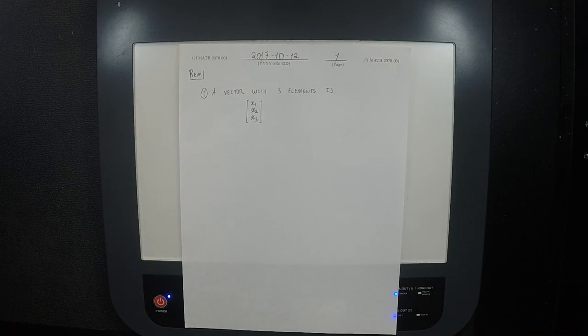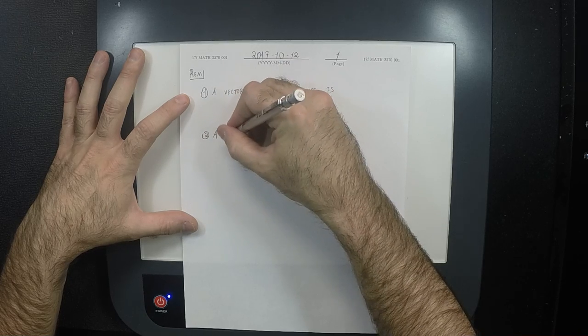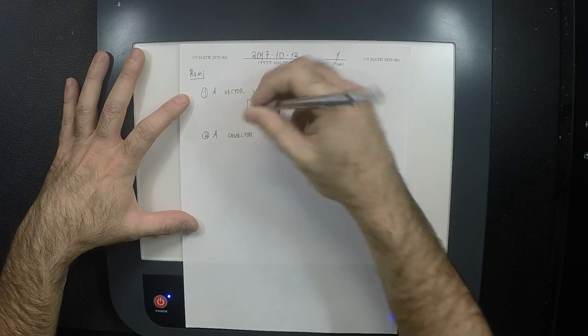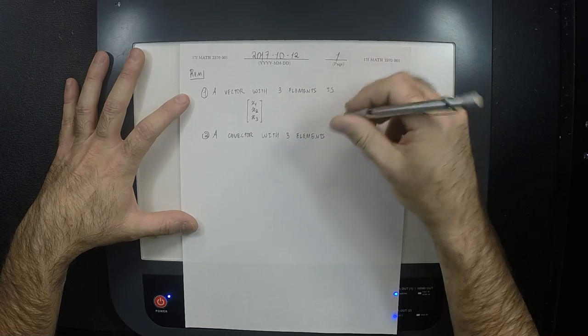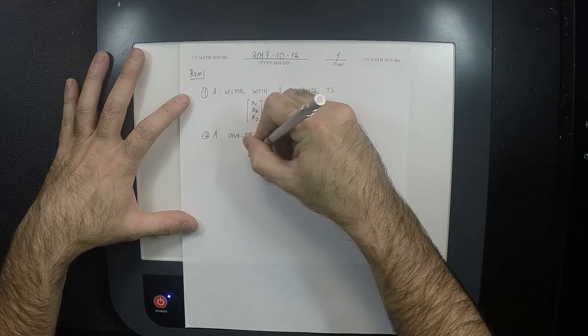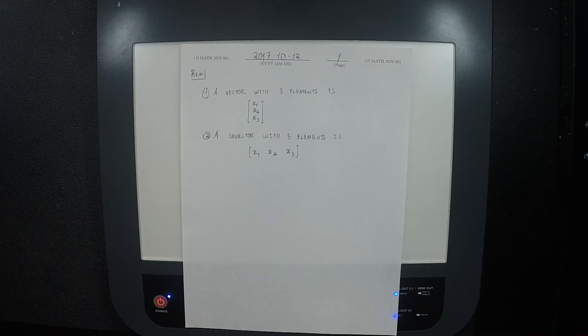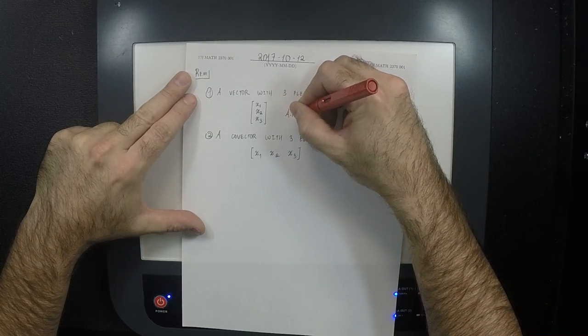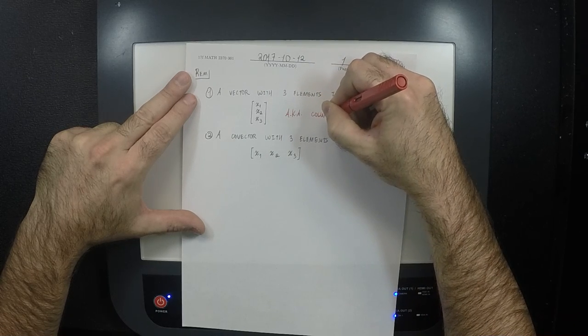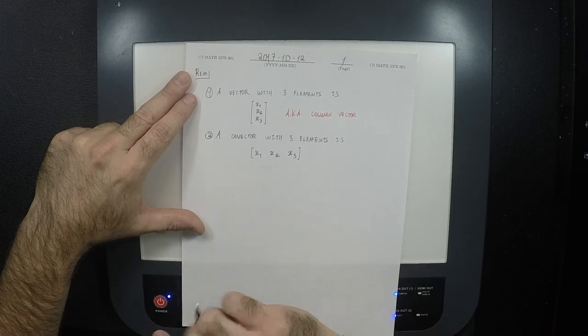So I did it specifically with three elements, but you can imagine what it would mean to have a vector with seven elements. It would mean that it would be x1 through x7. And a covector with three elements is something that's written like this: x1, x2, x3. So because of the way that they're written, very frequently this is also known as a column vector. And if we're going to refer to this one as a column vector, how will we refer to this one? A row vector.